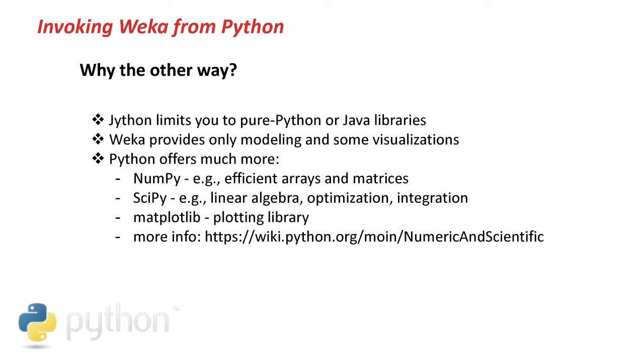Jython limits you basically to pure Python code and to Java libraries. And Weka provides only modeling and some limited visualizations. However, Python has so much more to offer. For example, NumPy, a library for efficient arrays and matrices. SciPy for linear algebra, optimization and integration. There's Matplotlib, a great plotting library. You can check all this out on the Python Wiki under Numerical and Scientific Libraries.